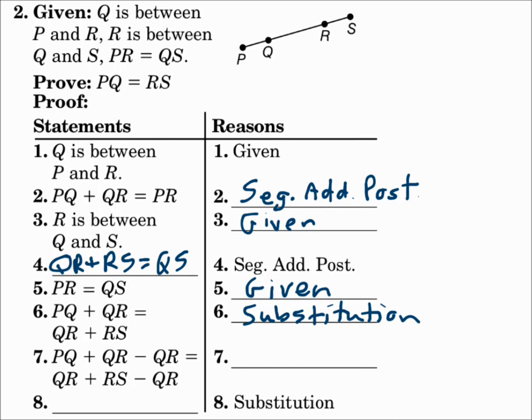Now, thinking about where I'm headed, I need to say PQ equals RS. Look at my equation now. I have a PQ and an equals and an RS. I just have a QR on each side. They subtract QR from each side on the next statement, so that will be the subtraction property. When you subtract QR from each side, you can simplify and get PQ equals RS. That's substitution. So we've said what we wanted to say.